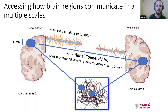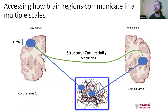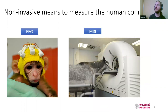This functional connectivity exists because there is the so-called structural connectivity that we can measure with diffusion MRI, where we measure the number of fiber bundles between two brain regions. When we want to measure functional connectivity, we can use EEG or MRI, but we can also use MEG. So everything I'm talking about today from the EEG side also applies, most of the time, to MEG.